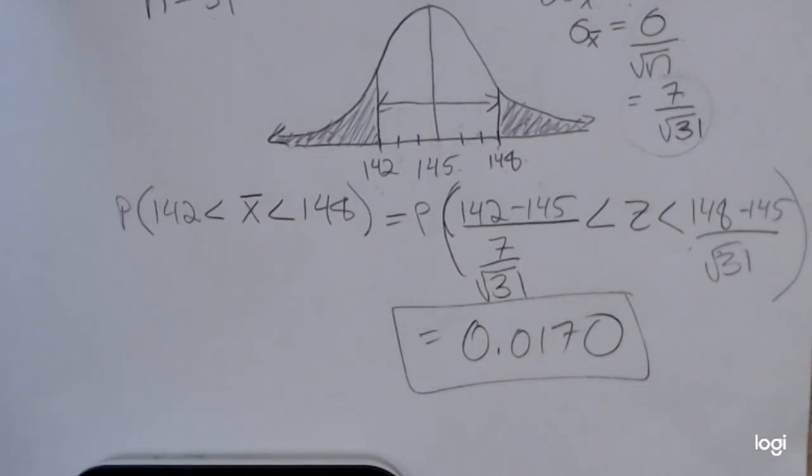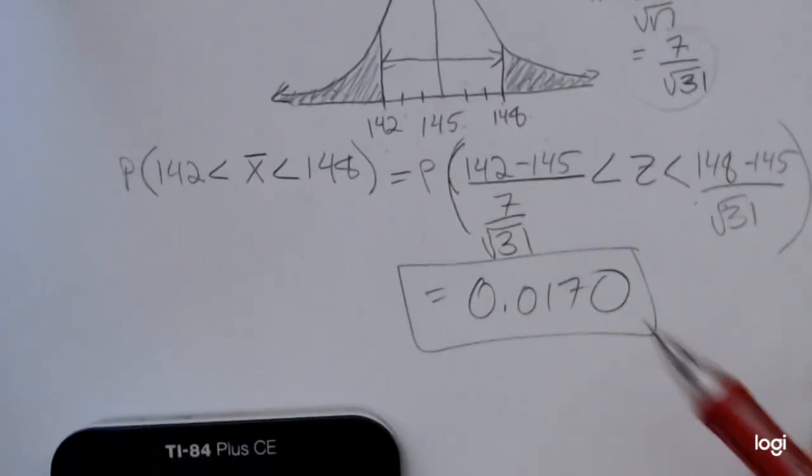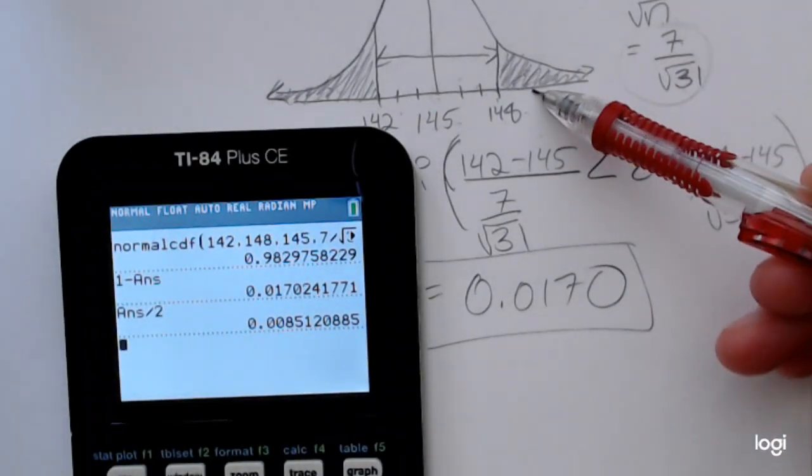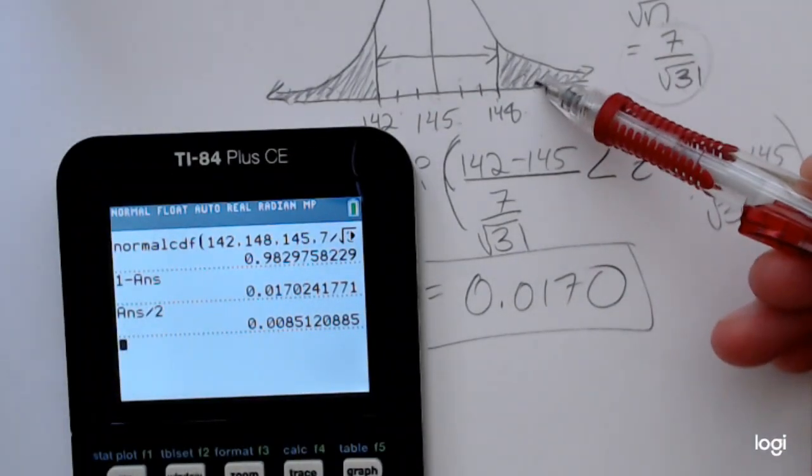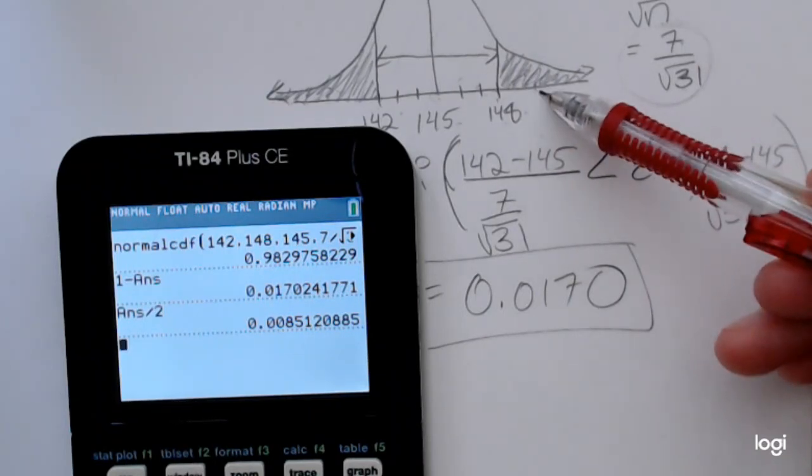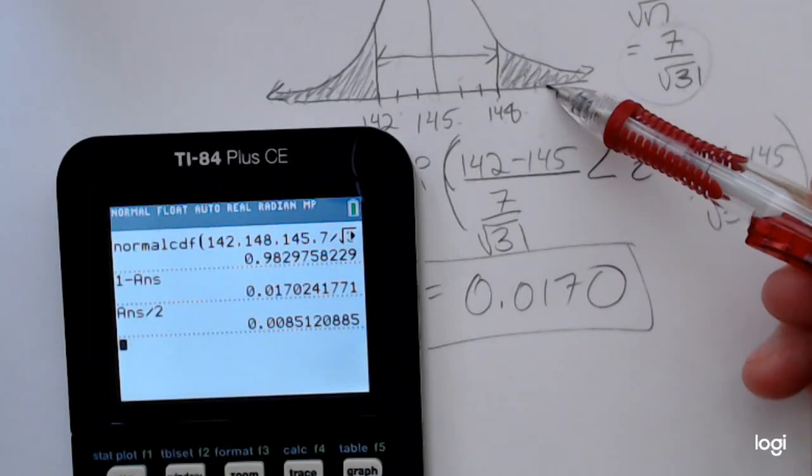Now that's a pretty small area. So if I divided that in half, one tail would only have about 0.01 rounded to two decimal places amount of area, very small.